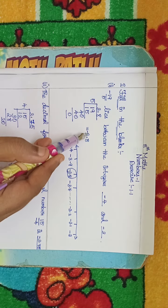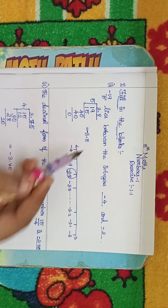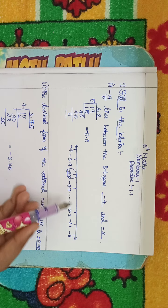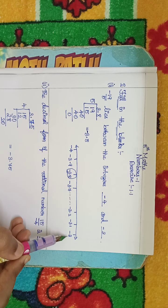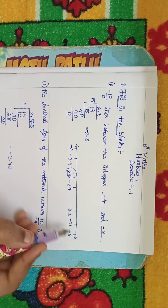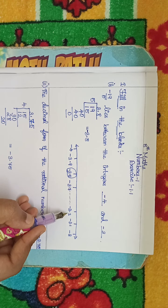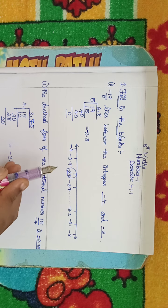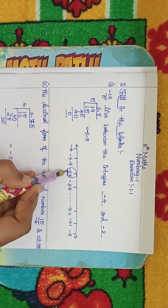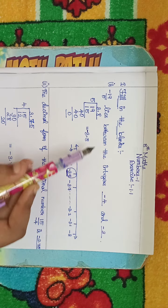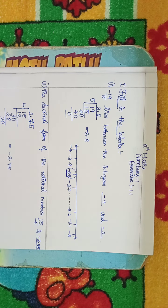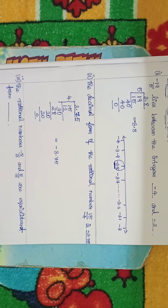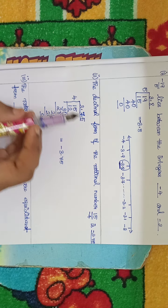Minus symbol, minus symbol. Minus 3.8 on the number line. Minus 3, minus 4, minus 3.1, minus 3.9, minus 3.8.